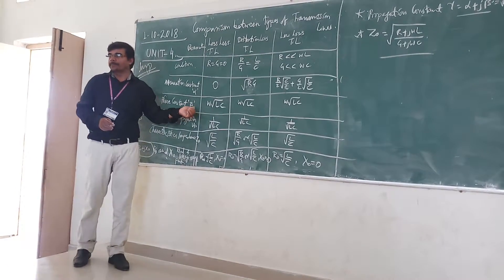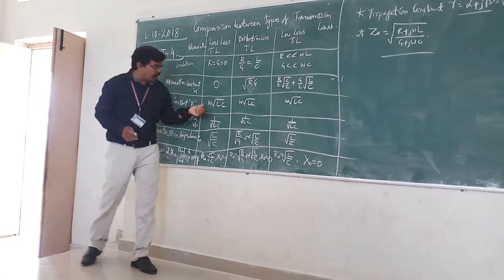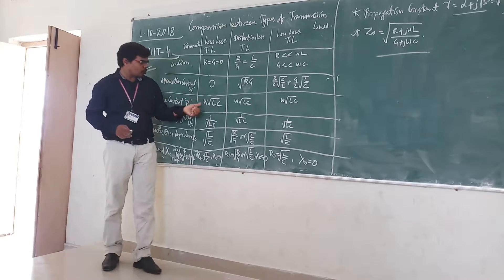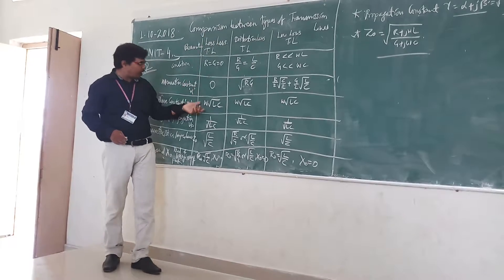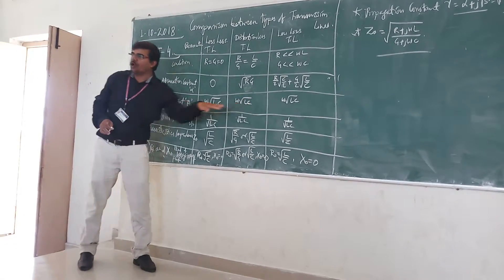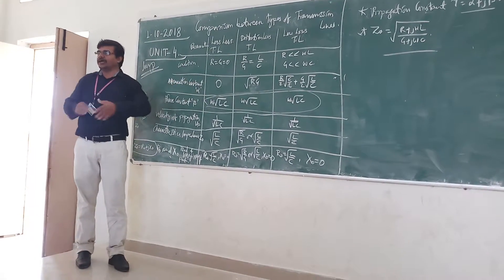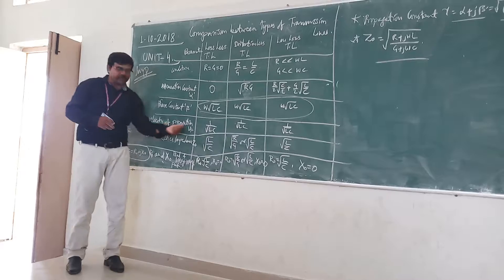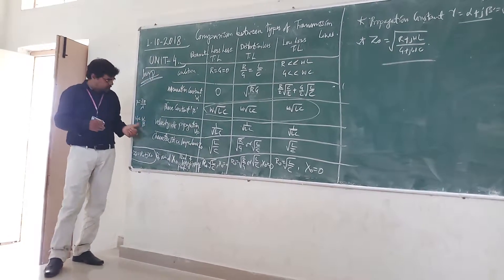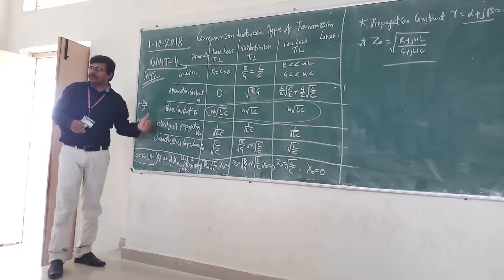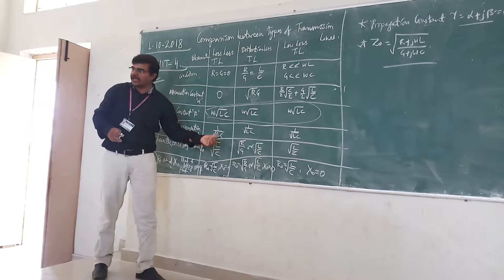For the phase constant beta, it will be omega times square root of LC in case of lossless. The phase constant is the same for all three conditions. Velocity of propagation is omega by beta, and since beta is almost the same for all, velocity of propagation will also be the same — 1 by square root of LC — for all conditions.